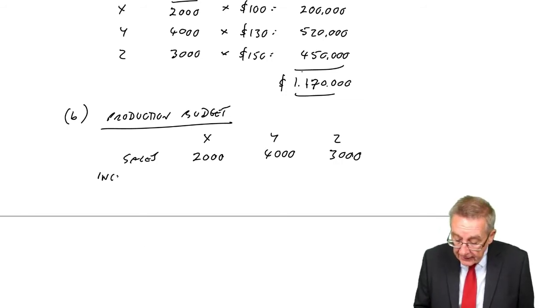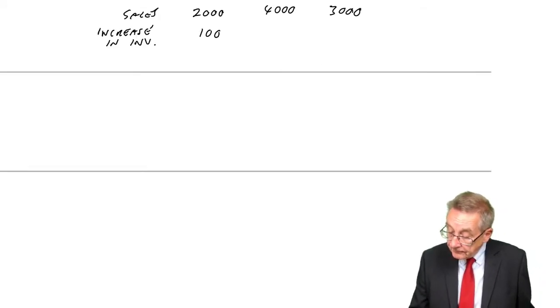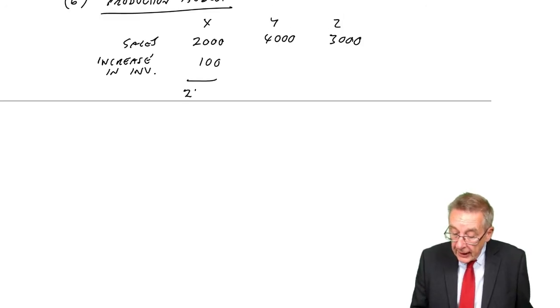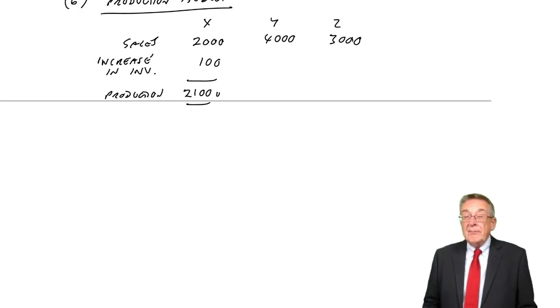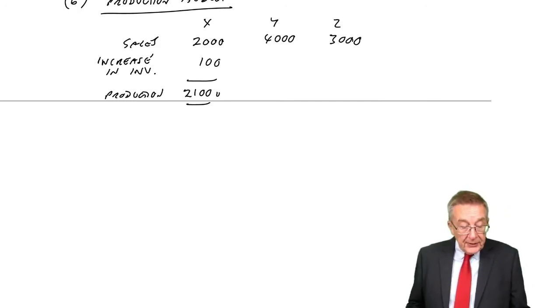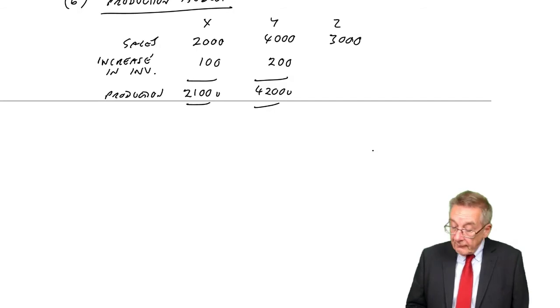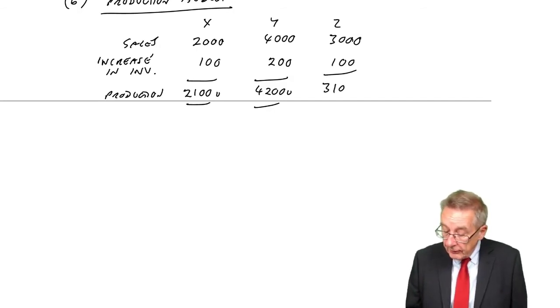The increase in inventories: Product X, we want the inventory to go up from 500 to 600, an increase of 100 units. So they're actually going to have to produce 2,100 units - 2,000 to sell and the extra 100 to increase our inventories. Similarly, Y: inventory goes up by 200 units, so we produce 4,200 units. And Z: increase of 100, production 3,100.